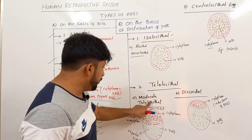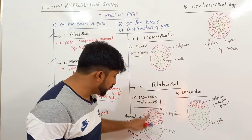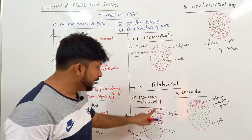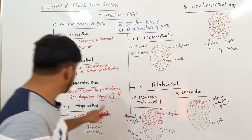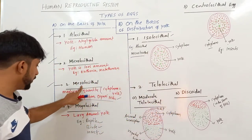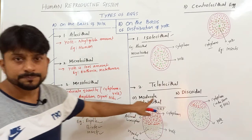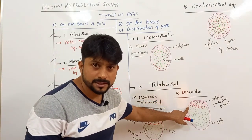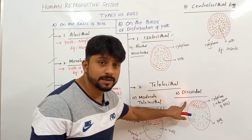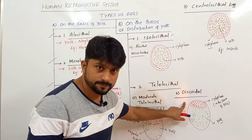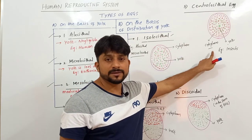Moderate Telolecithal types of eggs are found in Amphibians. Discoidal eggs are mostly Megalecithal types, which are found in birds and reptiles. Prototherian mammals also have discoidal types of eggs. Centrolecithal eggs are found in insects.